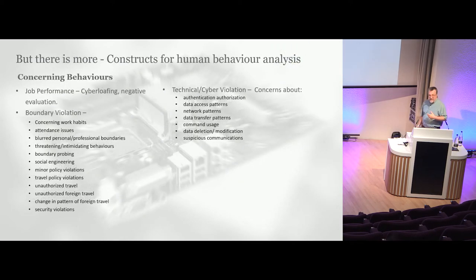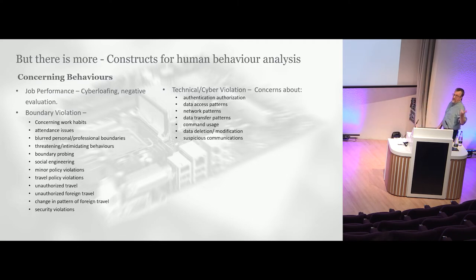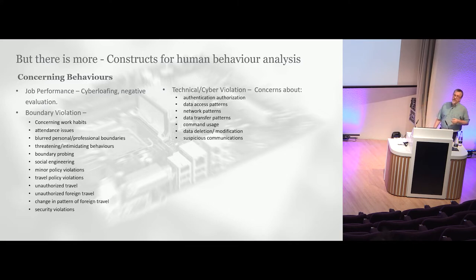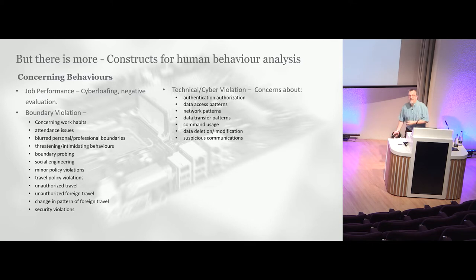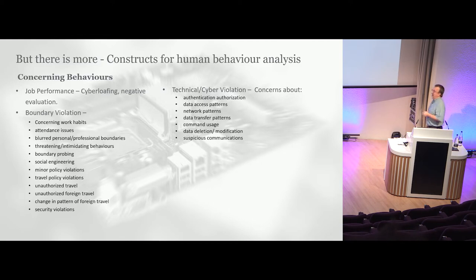So how do we apply these? Concerning behaviors you can actually track include things like cyberloafing or negative evaluations — early HR indicators. Spending three hours on Facebook a day may not be in your company's best interest. Other concerning work habits include attendance issues, blurred professional boundaries, people taking liberties, and minor policy violations. You may get social engineering or Machiavellianism within the company where people start to manipulate others. Then you can start to get technical violations, which most security professionals are already well-equipped to pick up.